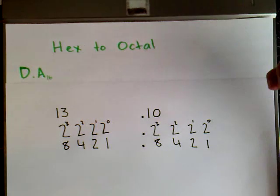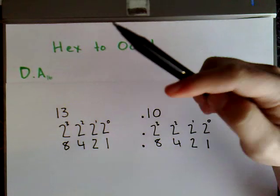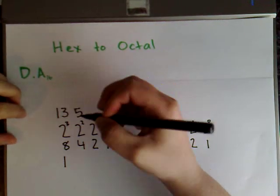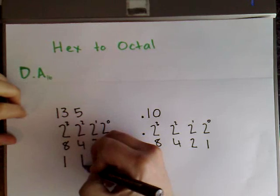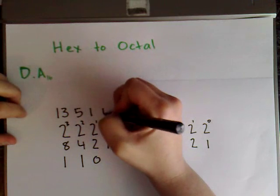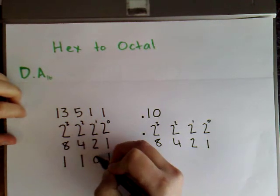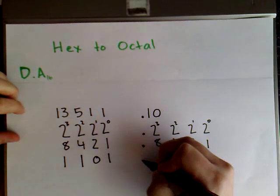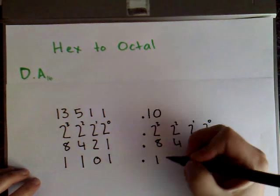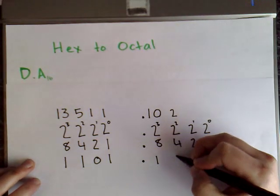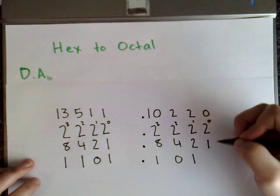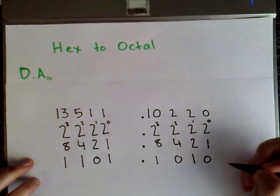And we're using division again. So, how many times will 8 perfectly fit into 13? It'll fit once. The remainder of 5. 4 into 5, 1. The remainder of 1. 2 into 1, 0. Carry the 1 across. 1 into 1 fits once. And I'll do the same for the next group. So, 8 into 10, 1. Remainder 2. 4 into 2, 0. Remainder 2. 2 into 2, 1. The remainder of 0. 1 into 0, 0.